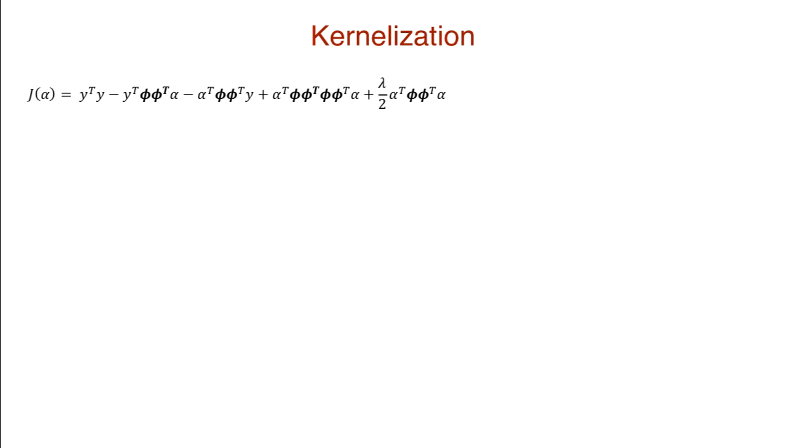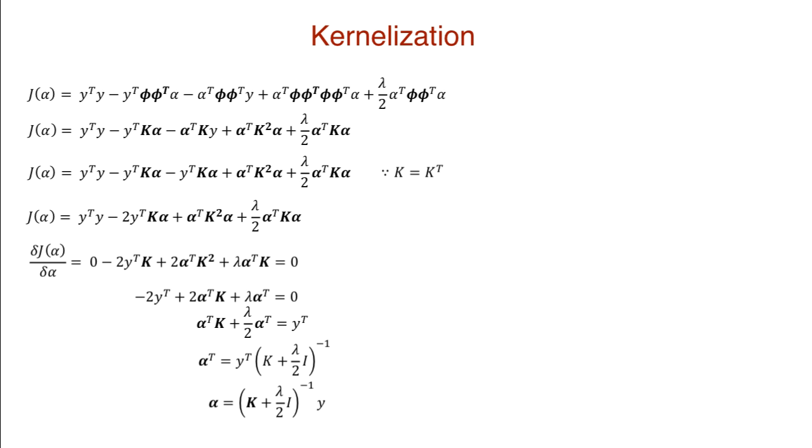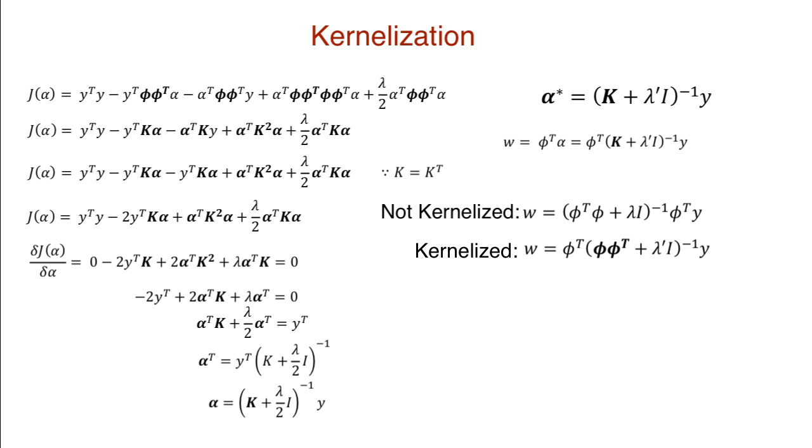But for now, let's use these properties in our simplification of the cost function. First off, transpose the scalar term. We can do this because scalars are symmetric. We minimize this cost function to get the optimal value of alpha. Once we have the optimal alpha, we can express the weights in terms of this kernel matrix. So what's the difference between this set of weights and the one that we computed before without kernels?